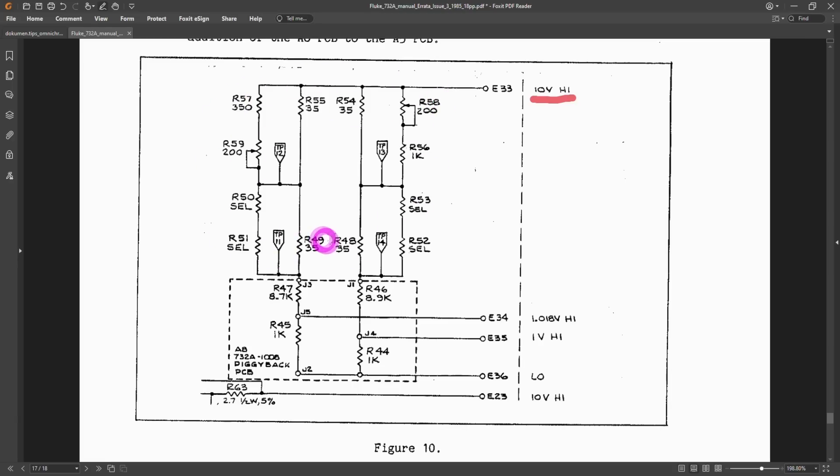You can see that we have a whole bunch of resistor dividers and in particular we have this piggyback board that has been added to some versions of this instrument. I'm not sure if mine particularly has this one or not, but nonetheless the 1 volt and the 1.018 volt are derived through these resistor dividers.